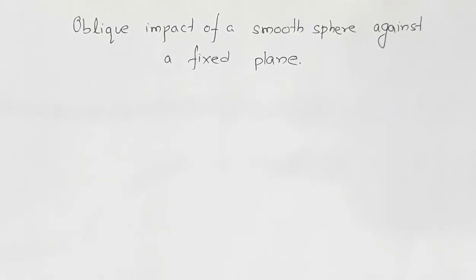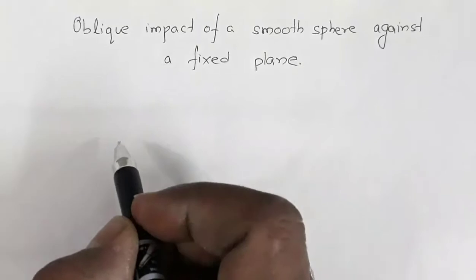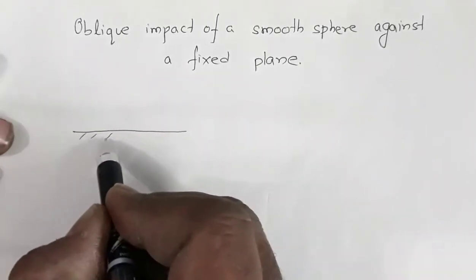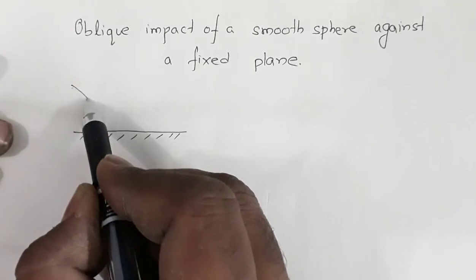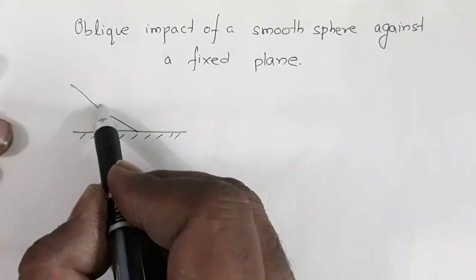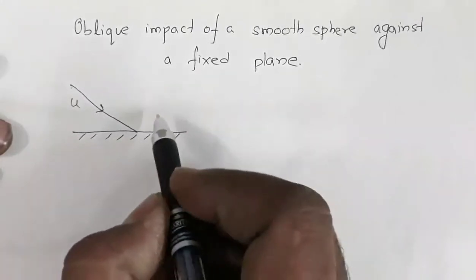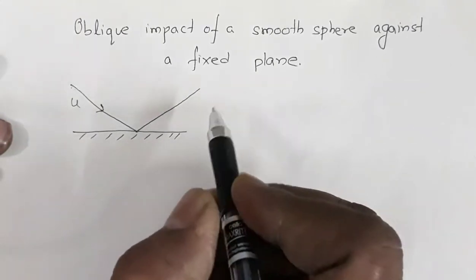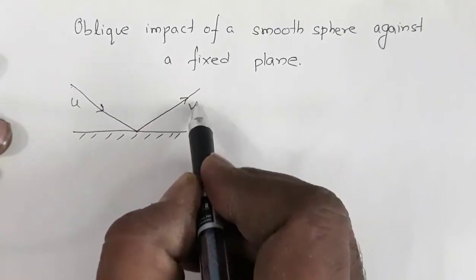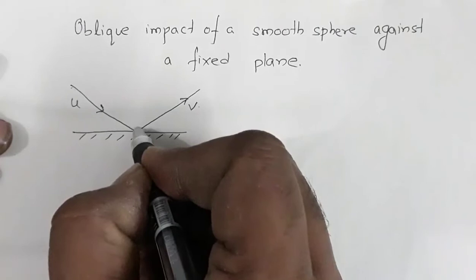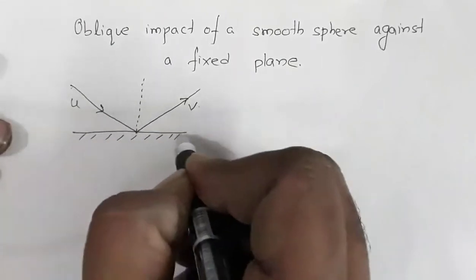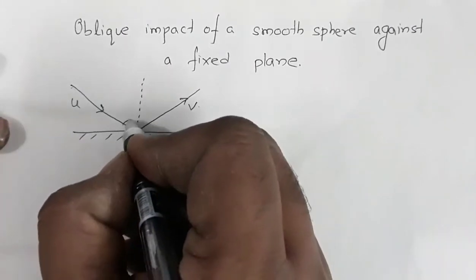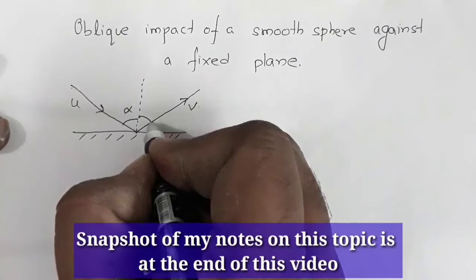In this video I am going to explain the oblique impact of a smooth sphere against a fixed plane. Suppose you have a fixed plane that is immovable, and this sphere comes in this direction, strikes the surface with speed u, and leaves the surface after collision with speed v in this direction. This is the normal at the point at which the sphere strikes the fixed surface. This angle is alpha and this angle is beta.